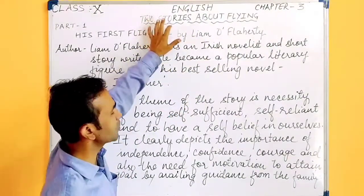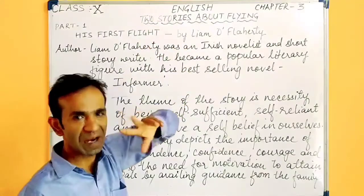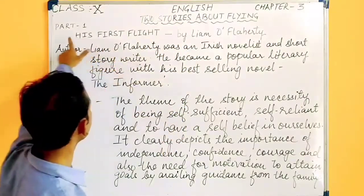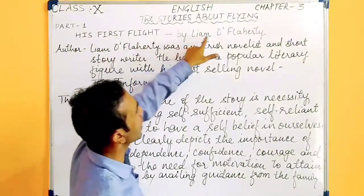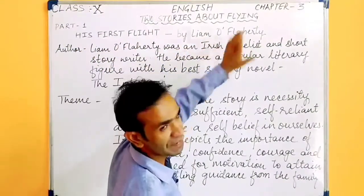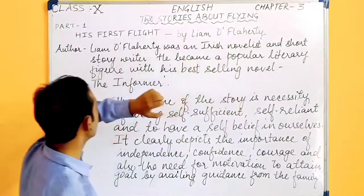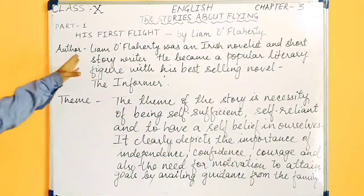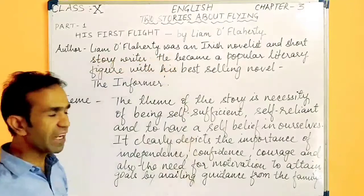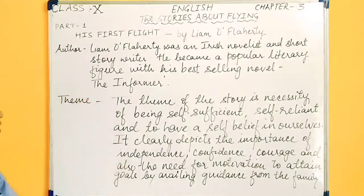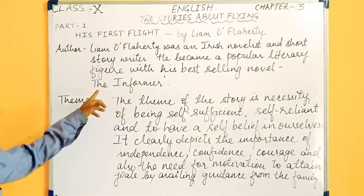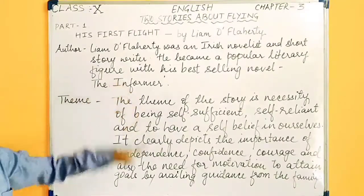This chapter is divided into two parts. The first part is 'His First Flight,' written by Leopold Flaherty. Let us first read about the author. Leopold Flaherty was an Irish novelist and short story writer. He became a very popular literary figure with his best-selling novel, The Informer.